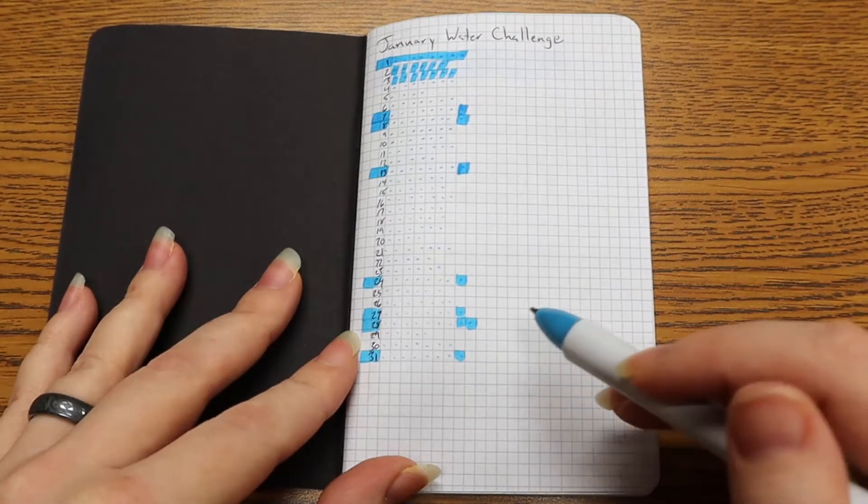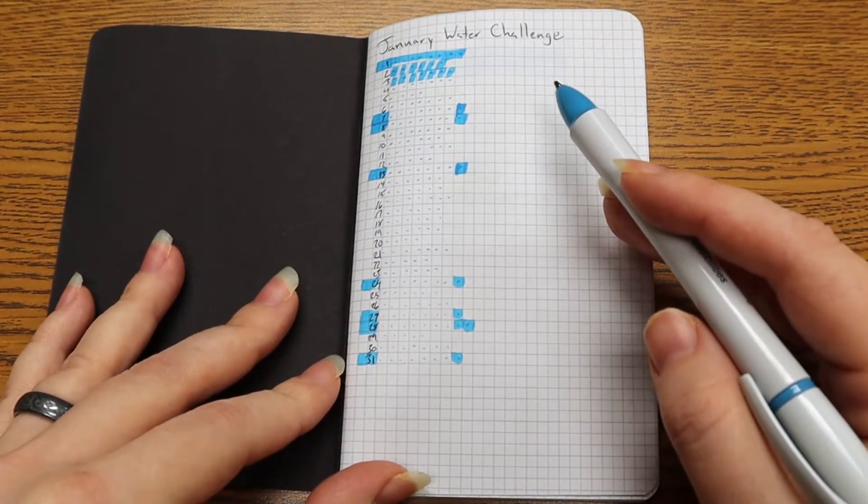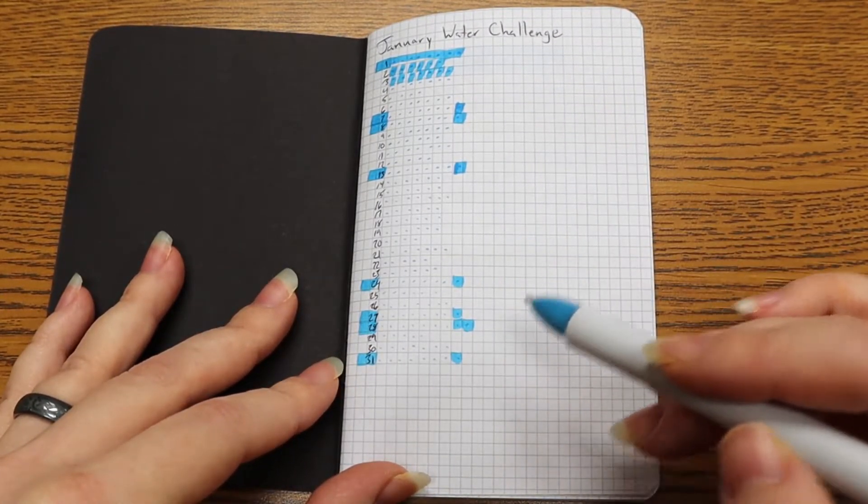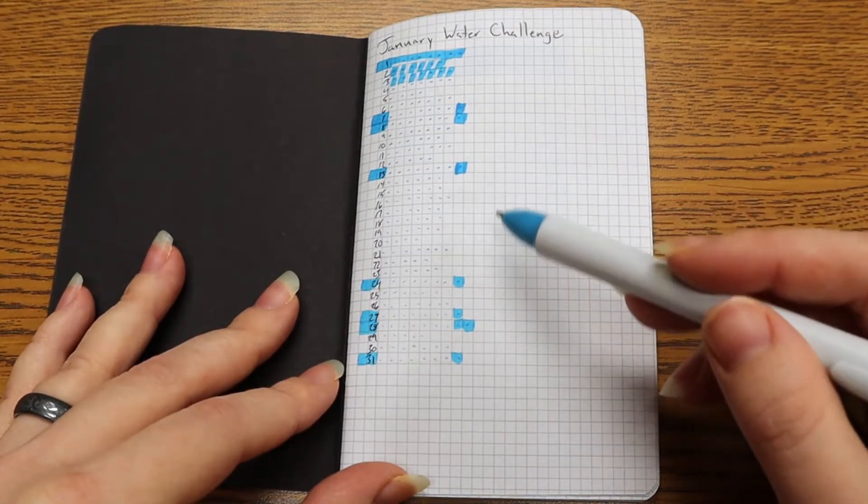And then I made larger dots when I got to the end of the day if I had actually fulfilled it. So with this tracker, I can easily see when I'm drinking enough and when I might need to be drinking a little bit more for me at least to hit my goals.